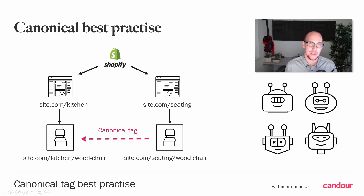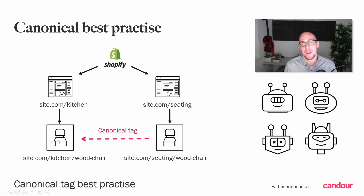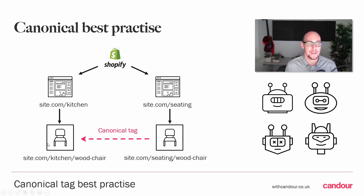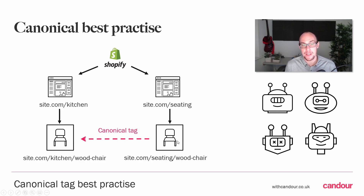Shopify has a solution to this issue: when you add products into collections, you specify the primary collection, and all other variations of this product in different collections have a canonical tag pointing back to that primary product. However, this is not an optimal solution despite what Shopify will tell you, because the canonical tag is just a hint. If the kitchen collection version is set as canonical and it's the only version we want in search results, problems can still arise.